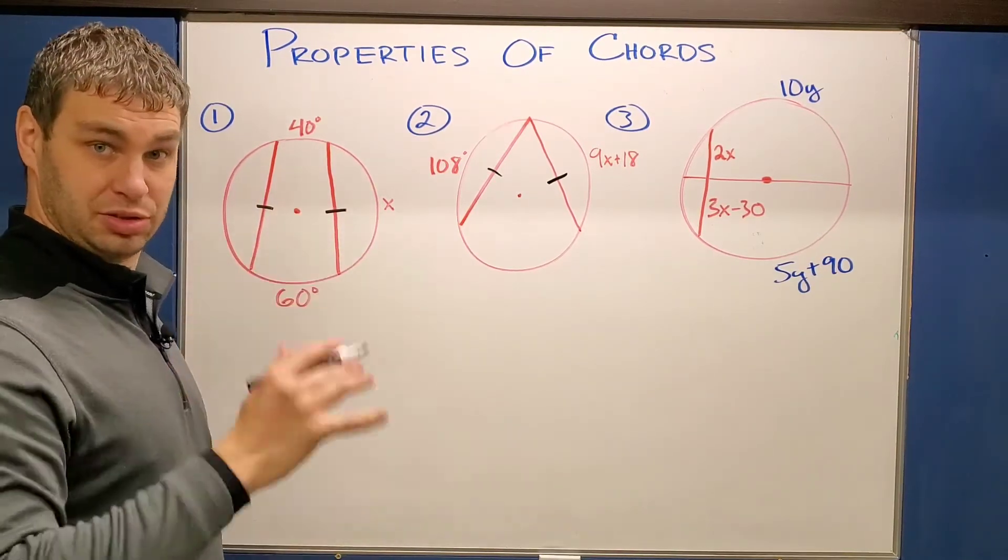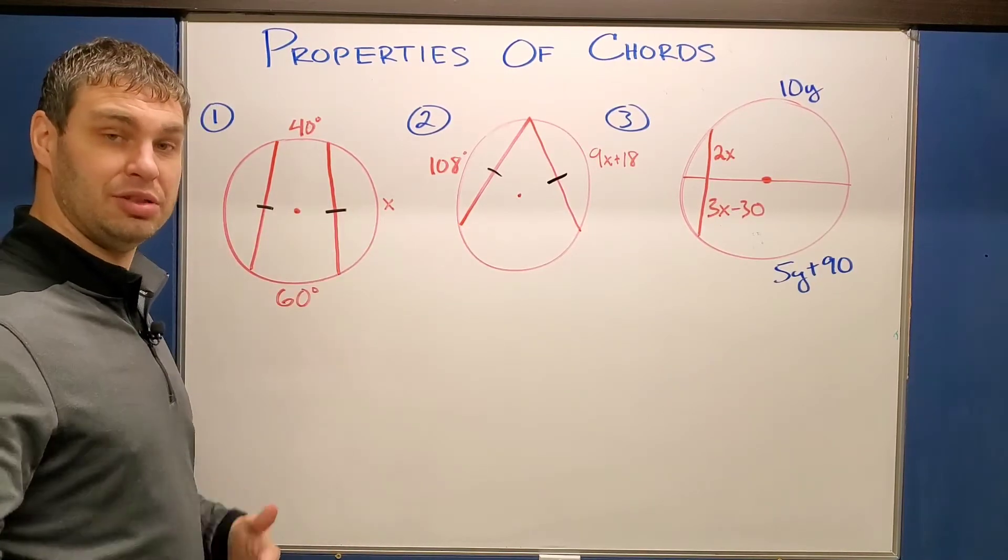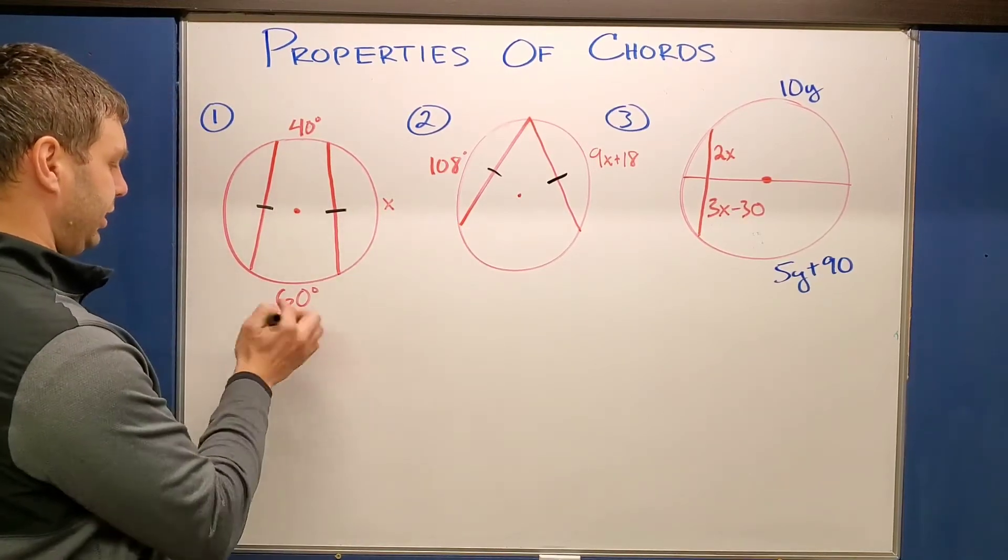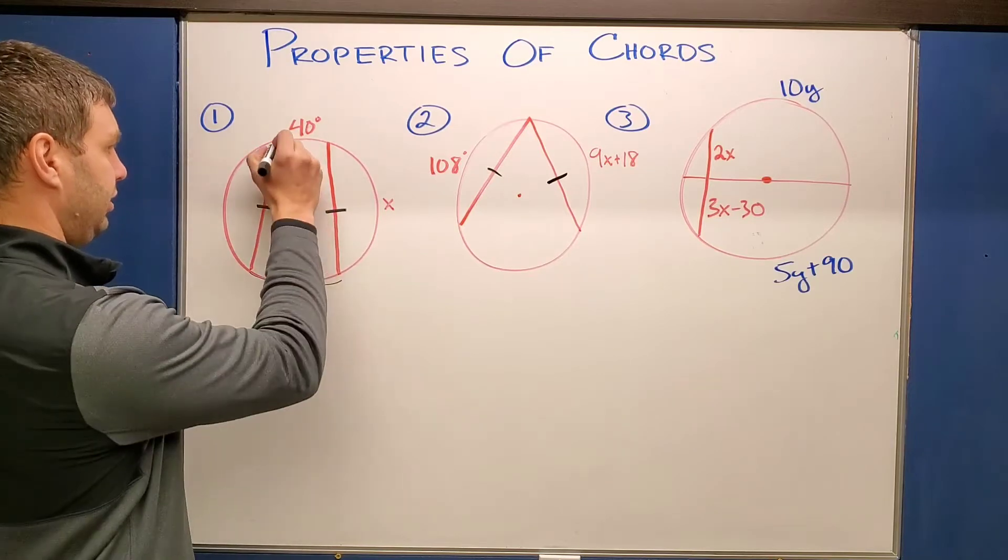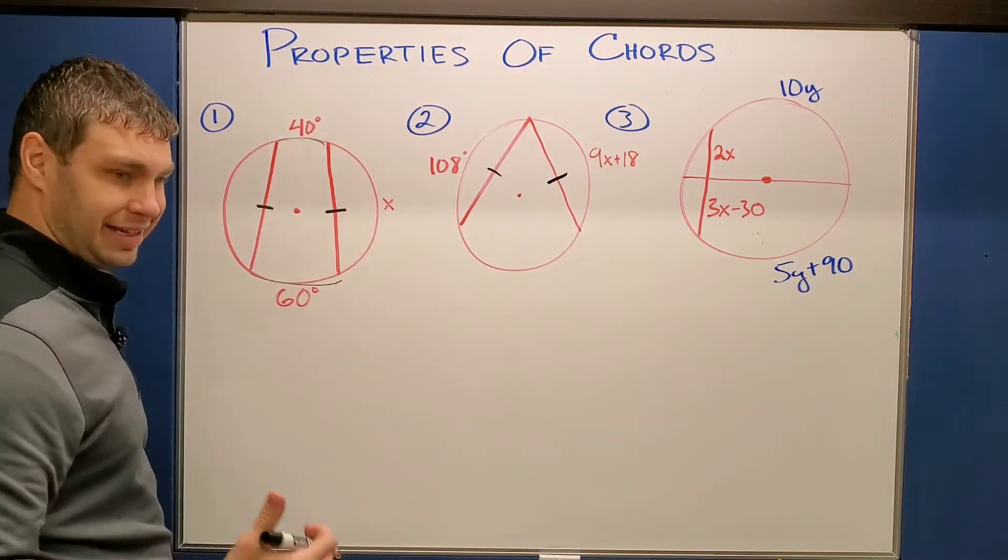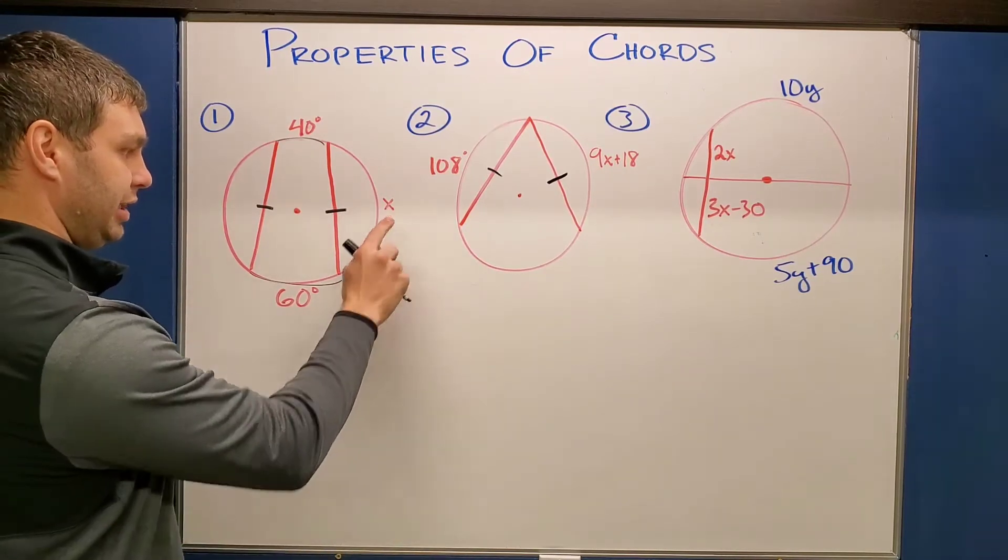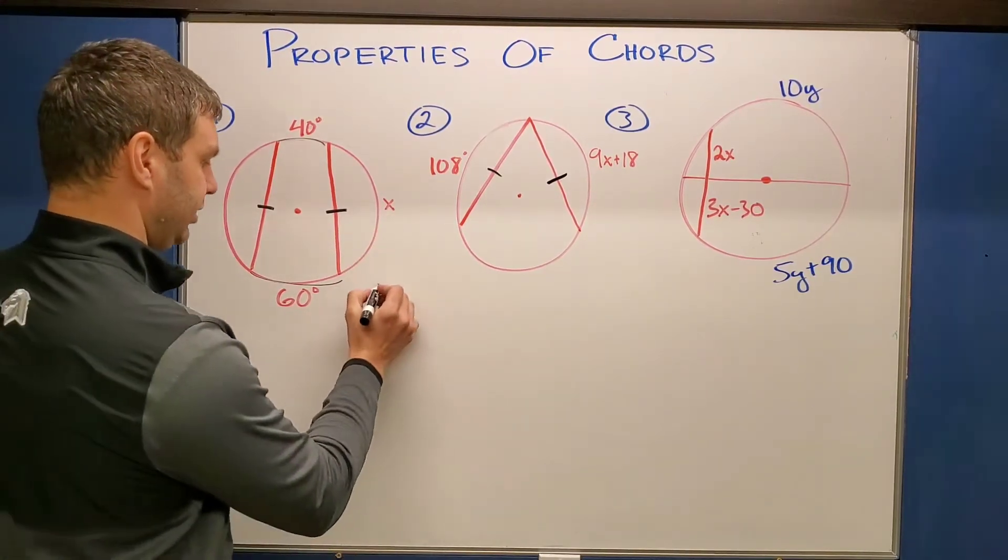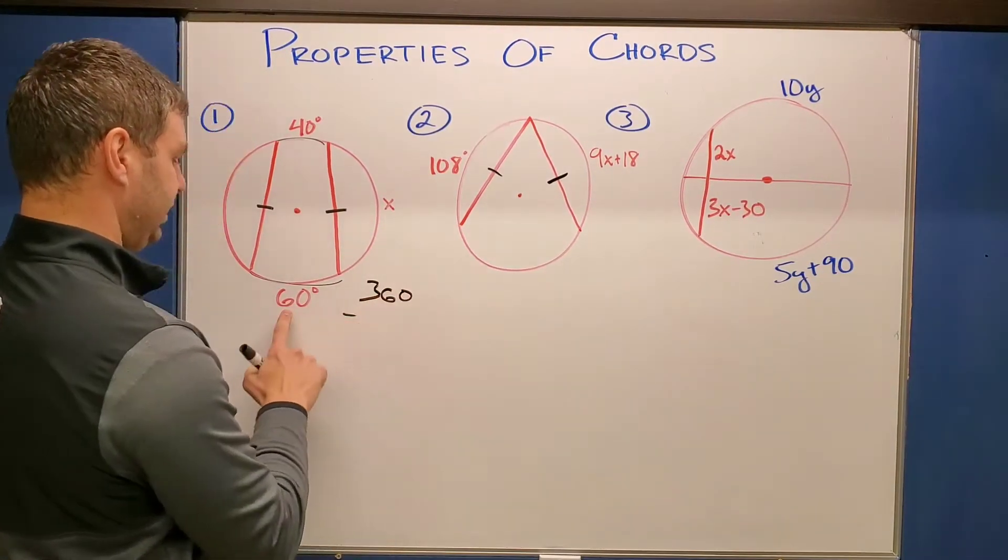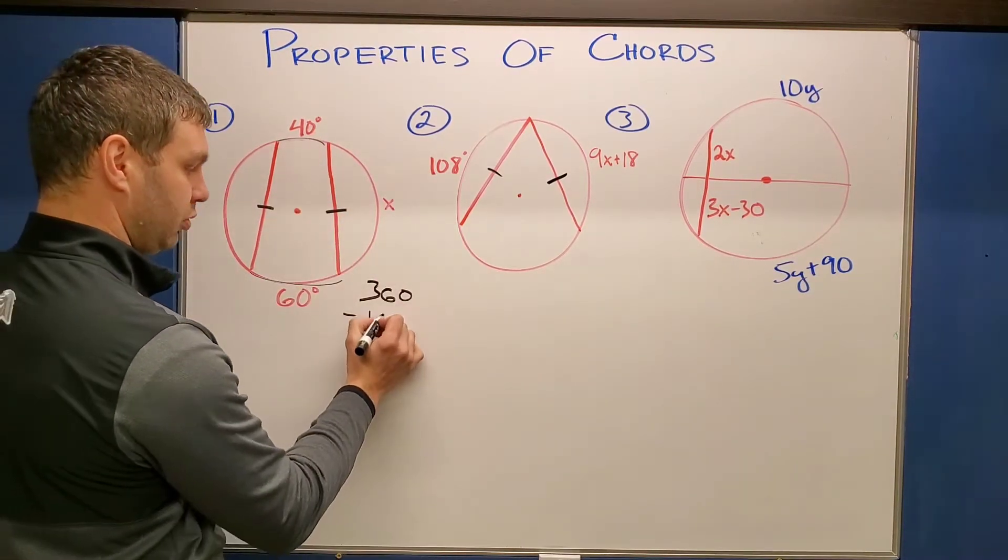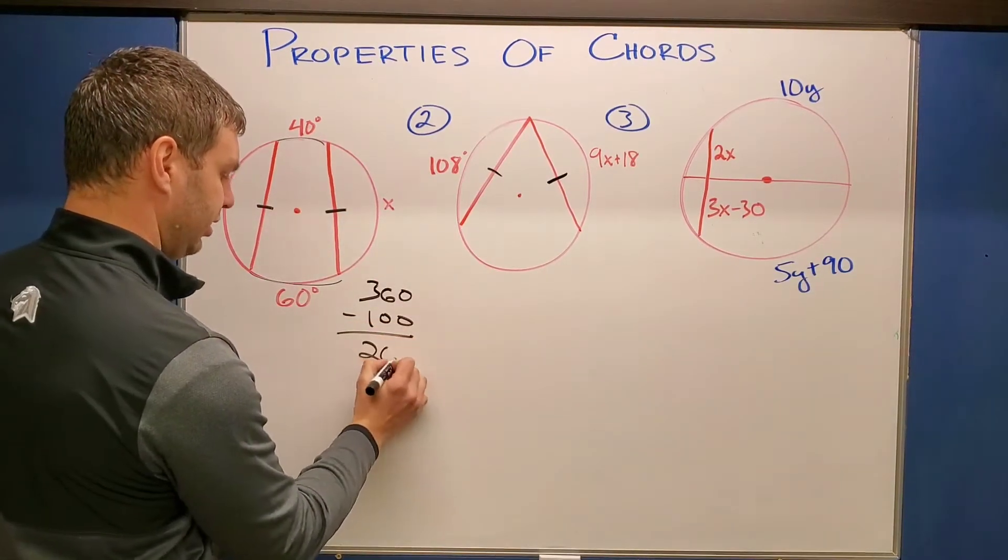So remember that in a total circle, all the way around, there's 360 degrees. And right now I just know that this part and this part are 60 and 40, so that adds up to be 100. I have no idea what this one is, but I do know that that's X. So let's just start by taking 360 and subtracting 60 and 40, like I said, together that's 100. So that leaves me with 260.